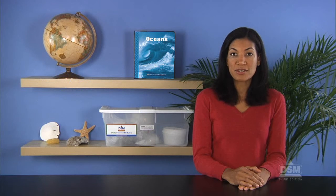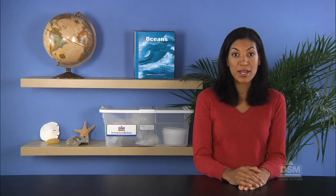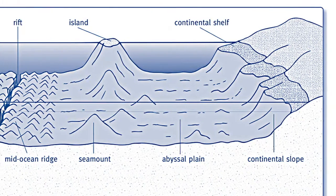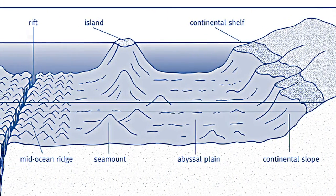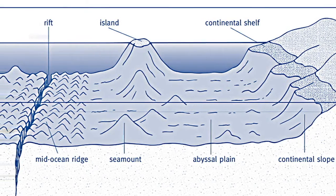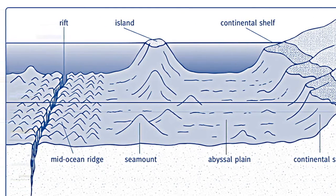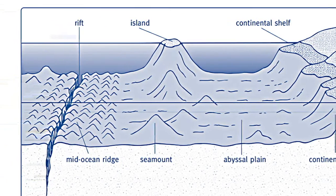Review the different features and have students label the diagram: continental shelf, continental slope, abyssal plain, mid-ocean ridge, seamount, island, and rift.